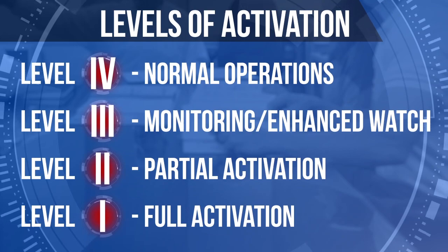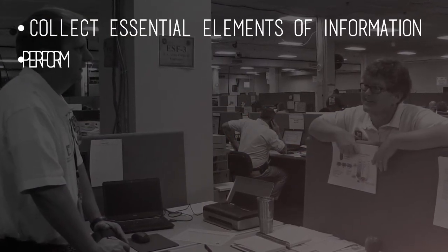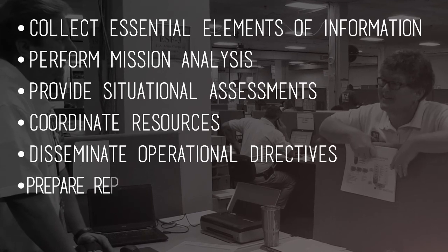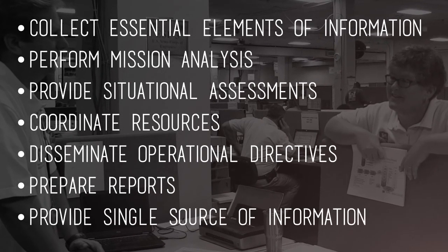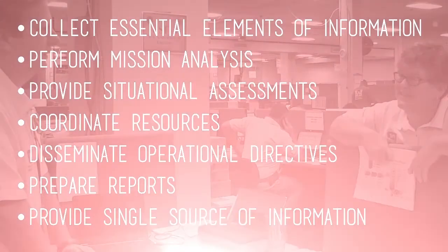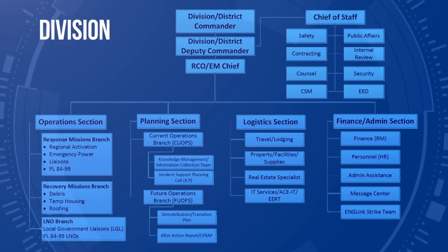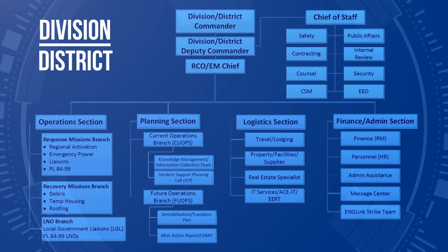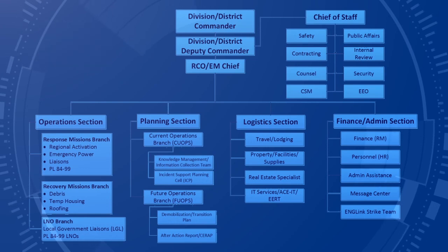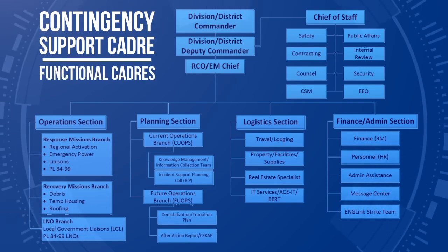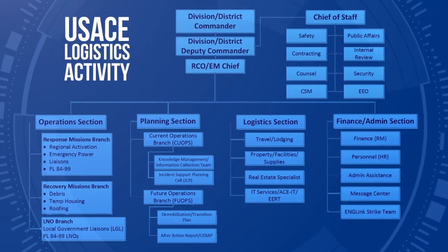The levels of activation are compatible with the activation levels and terminology used by FEMA headquarters, the FEMA regions, and most states. When activated for an emergency response, the EOC will collect Essential Elements of Information, or EEI, perform mission analysis, provide situational assessments, coordinate resources, disseminate operational directives, prepare reports, and provide the commander with a single source for all operational information needed to manage the event. The EOC will contain, at a minimum, the components and positions shown here. These positions will typically be filled by the impacted or supported division and/or district to establish and maintain command and control and unity of command. However, the positions can also be filled by the contingency support cadre, or CSC, if requested, or members from other functional cadres and/or support operations such as the USACE Logistics Activity and ACET.